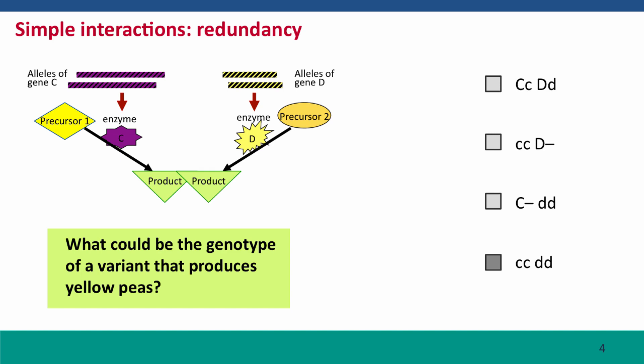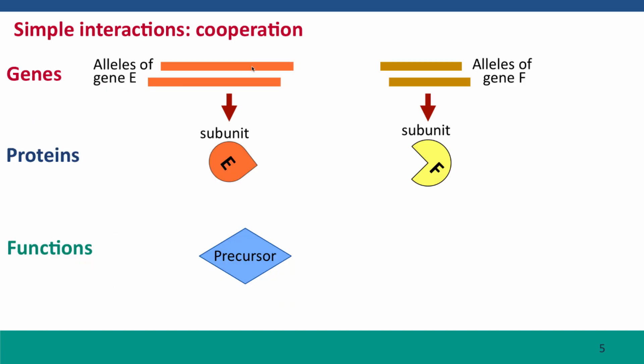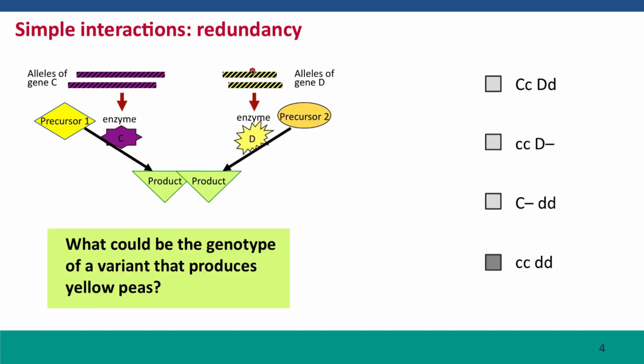And there's only one correct answer, because either gene can do the job. You're only going to get a mutant where the job doesn't get done, the job being synthesis of the green pigment if both pathways are completely knocked out.